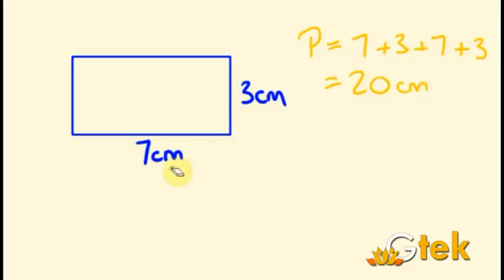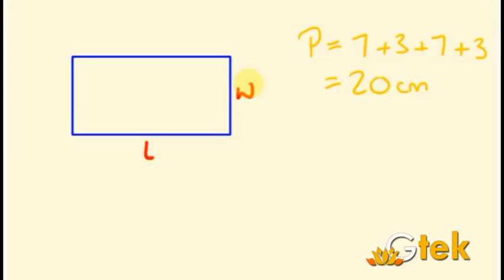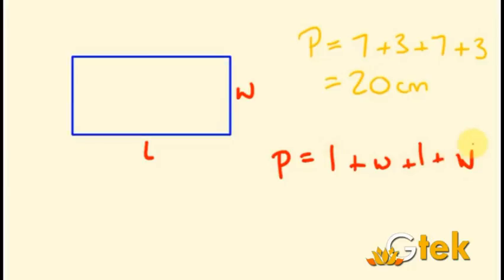Now we will make some adjustments. Instead of 7 and 3 as length and width, we will use L for length and W for width. The perimeter P is equal to L plus W plus L plus W — that is 4 sides. So that simplifies to 2L plus 2W.